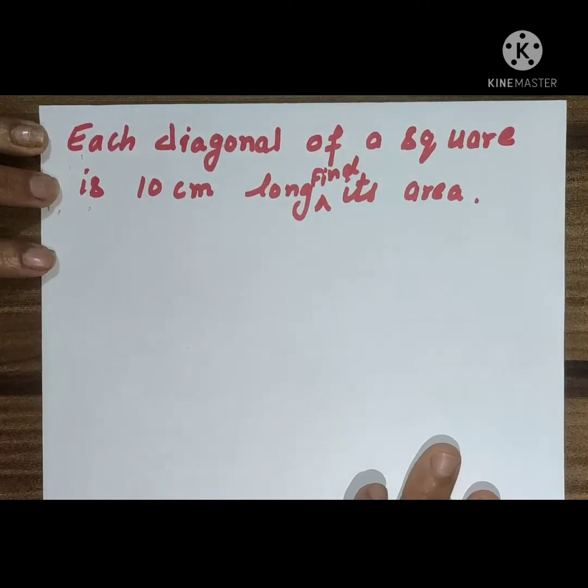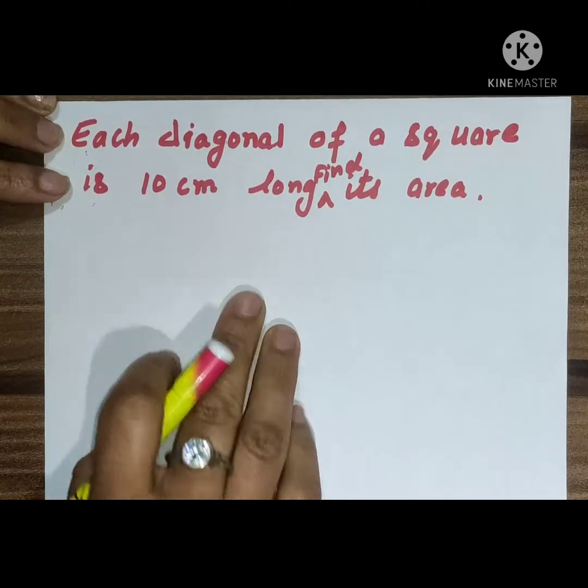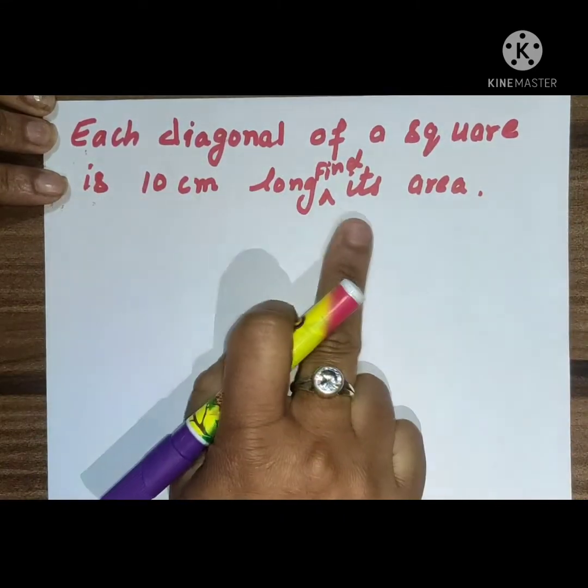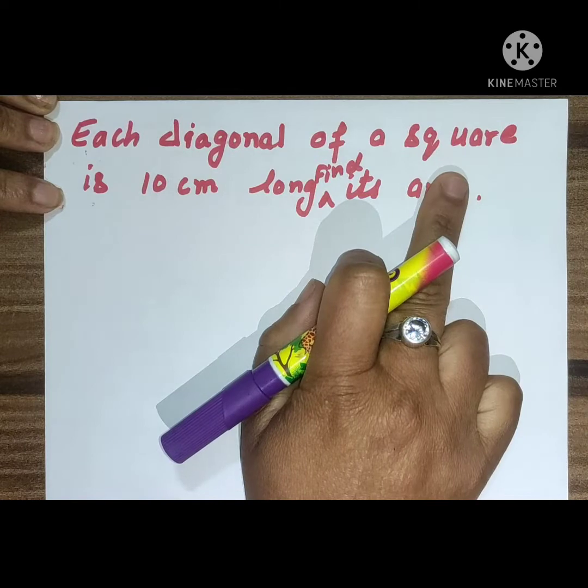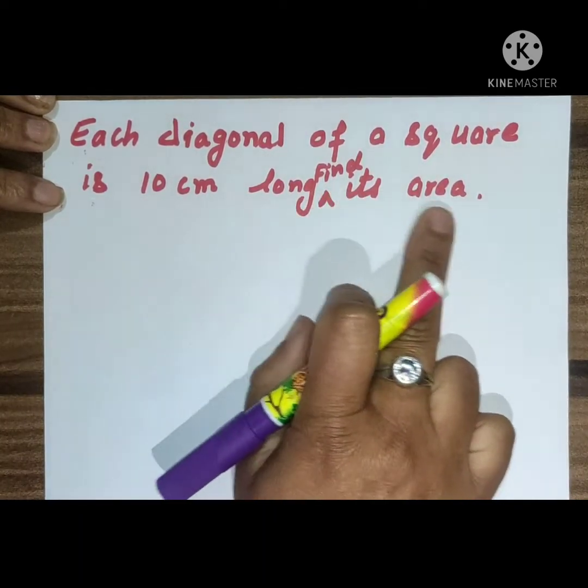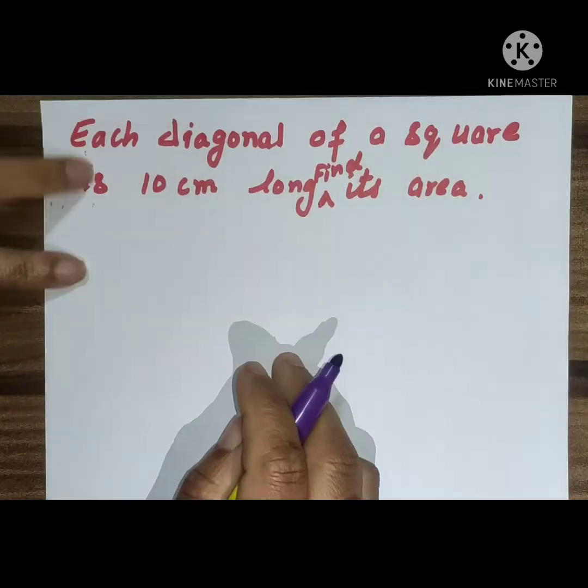Good morning, my dear students. How are you? Through this video, we will solve this question. The question is: each diagonal of a square is 10 centimeters long, find its area.